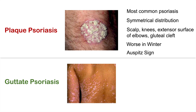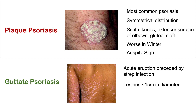The next type is guttate psoriasis — the drop-like psoriasis — characterized by small, acute eruptions of smaller plaques generally preceded by a streptococcal infection. These lesions are less than one centimeter in diameter and generally occur on the trunk and proximal extremities. A mnemonic: think about falling into a gutter onto your trunk, and water splashing up as droplets — that represents the little drop-like skin lesions of guttate psoriasis.